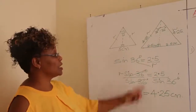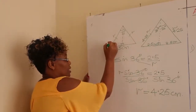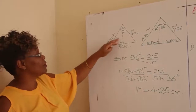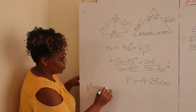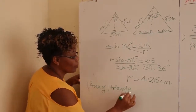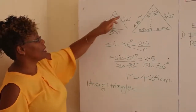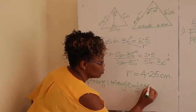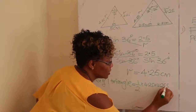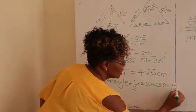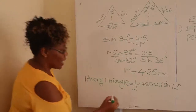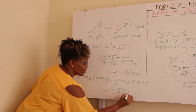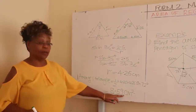Now, what is the area of our triangle? The area of one triangle is one-half times A times B times sin theta, because 72 degrees is the included angle. So it is one-half times 4.25 times 4.25 times sin 72 degrees. Working this out using a calculator, the area of one triangle is 8.59 centimeters squared.